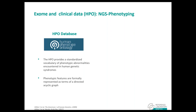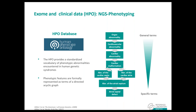One of these databases is called the Human Phenotype Ontology, or HPO. The HPO provides a standardized vocabulary of phenotypic abnormalities associated with human genetic conditions. It is currently being developed using the medical literature, Orphanet, DECIPHER, and OMIM. Phenotypic features are formally represented as terms within a directed acyclic graph, from general terms such as 'cardiovascular abnormality' down to specific terms like 'atrial septal defect,' with some causal variants as candidates.